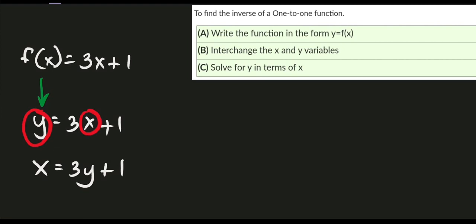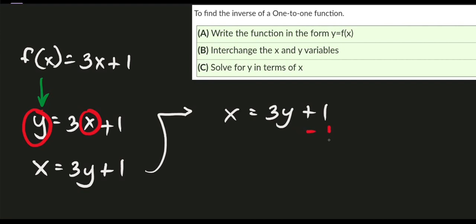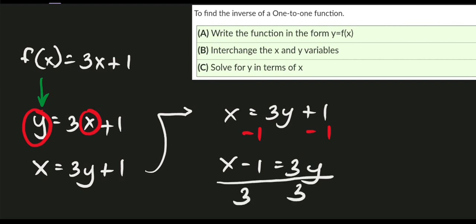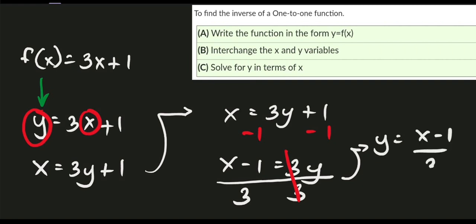Last, we need to solve for y in terms of x — that means isolate y and simplify. Starting with x = 3y + 1, subtract 1 from both sides to get x − 1 = 3y. Then divide both sides by 3, canceling the 3, so y = (x − 1) / 3. That is our final answer.